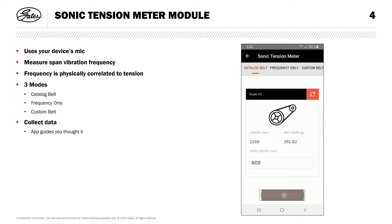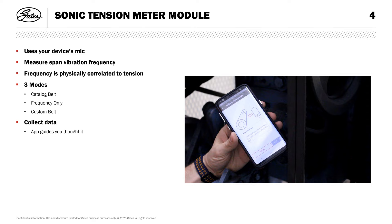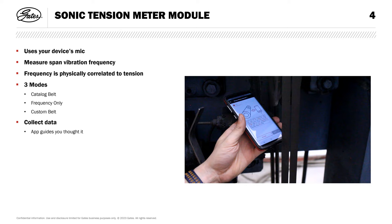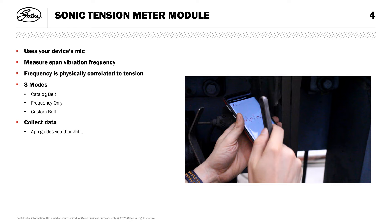I'll tap start measurement, and the application will guide me through collecting the data. First, I'll record an ambient noise sample. Position your device's mic near the belt span, make sure you aren't covering the mic, and hit record. If something noisy happened during that, you can repeat the ambient sample, but I'll hit next. Again, make sure your mic is unobstructed, close to, and pointed toward the belt span. Tap record, and give the belt a pluck or tap with your finger or a non-damaging tool. You should see the vibration ring out on the screen, then hit stop.